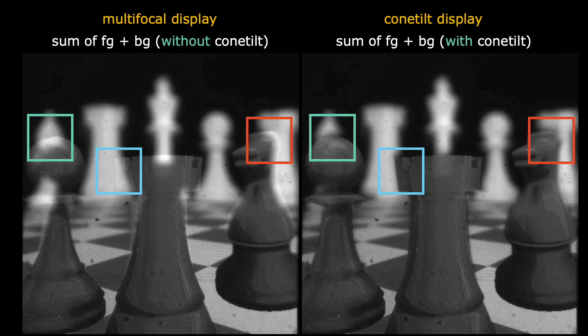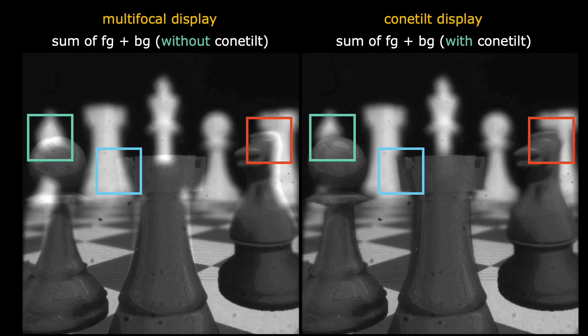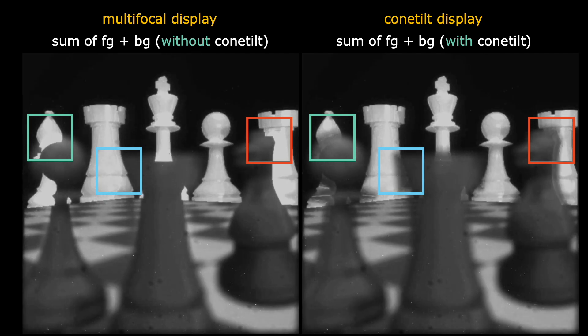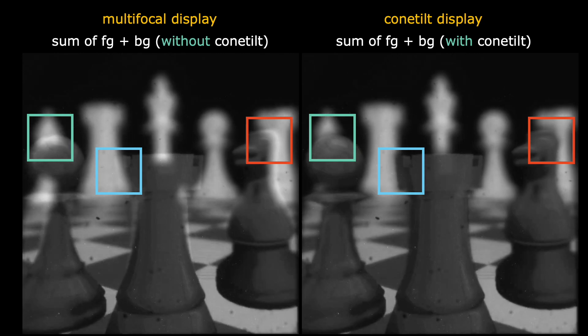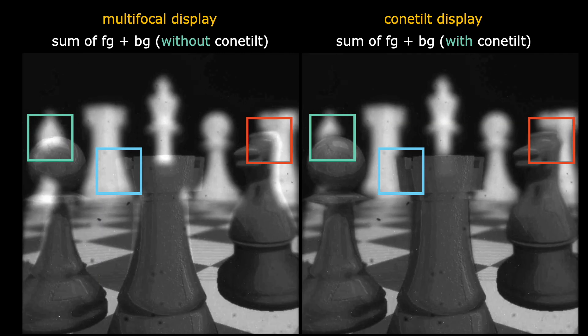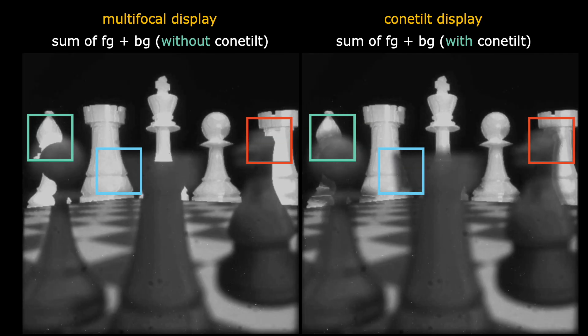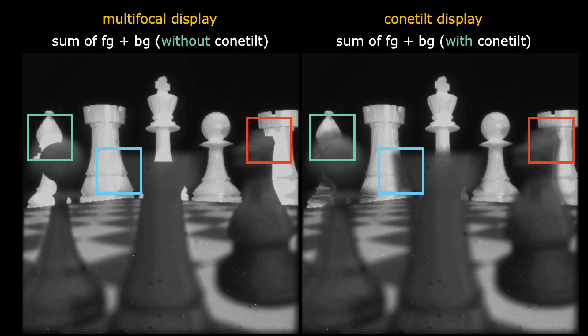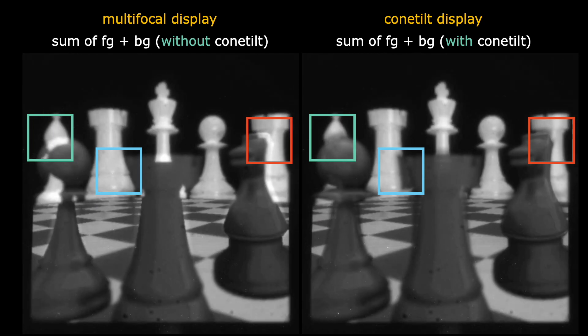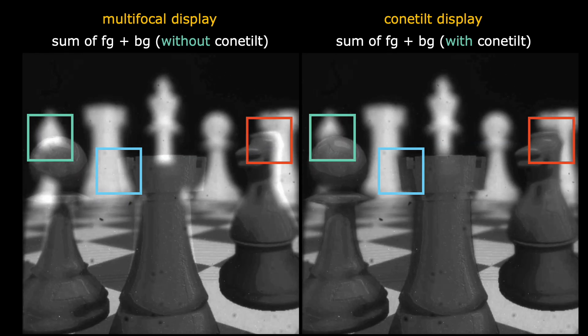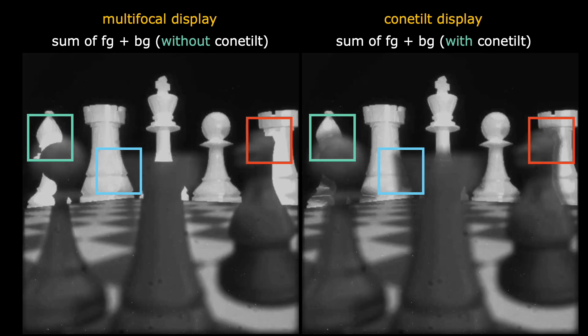To simplify the synchronization between the DMD and the phase SLM, we capture the foreground and the background separately, and sum their images in post-processing to get the final results. Compared to a typical multifocal display, the proposed ConeTilt display significantly reduces the light leakage from the background and produces occlusion cues.